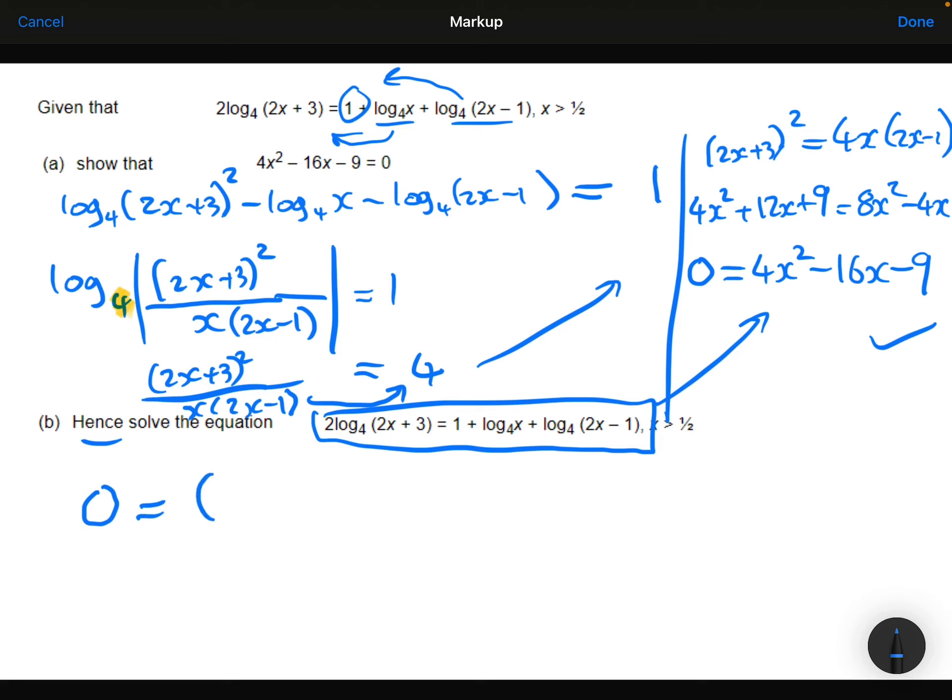So solving this quadratic, I'm going to factorize. So I've got the 4x squared. I think I'm going to need a 2x and a 2x to give the 4x squared. Then I think I'm going to need either a 3 and a 3 or a 1 and a 9 to get the 9. I'm going to try the 1 and the 9.